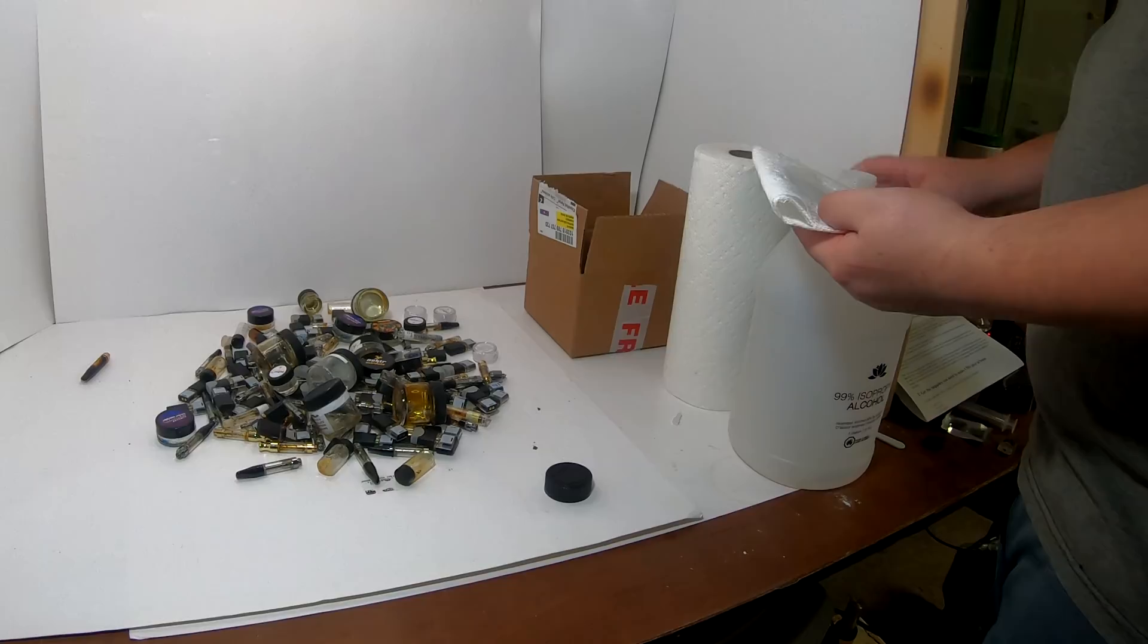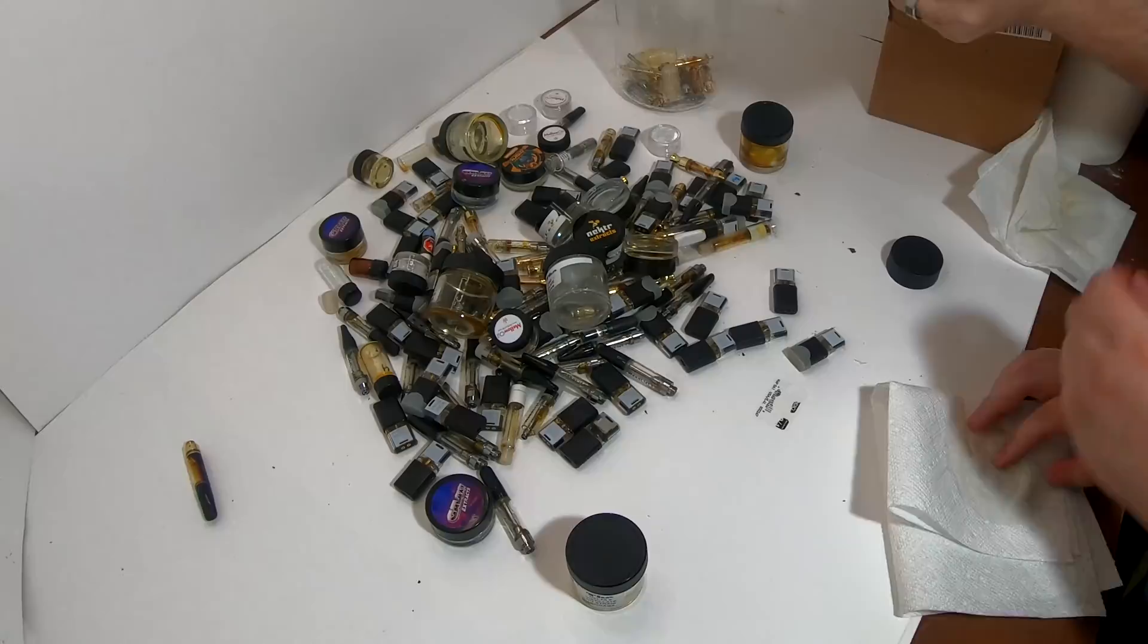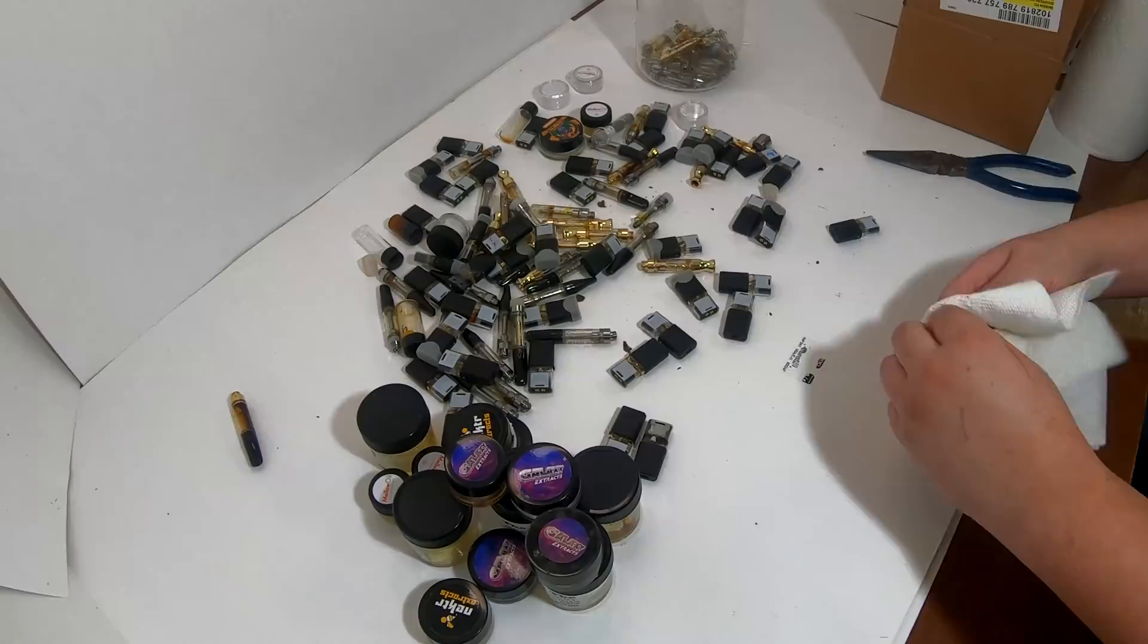The first step is to get some isopropyl alcohol and clean the outsides of each pod and cartridge to make sure there are no contaminants or bacteria. Here I have my lovely assistant cleaning each of them and tossing them into a beaker. Be sure to remove any bits of silicone or plastic as they may be dissolved in alcohol in a later step.